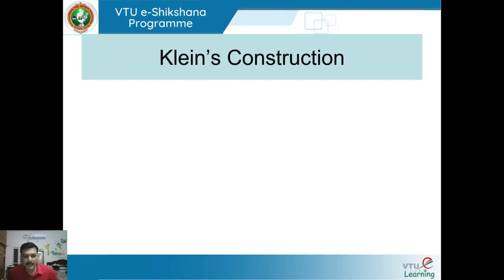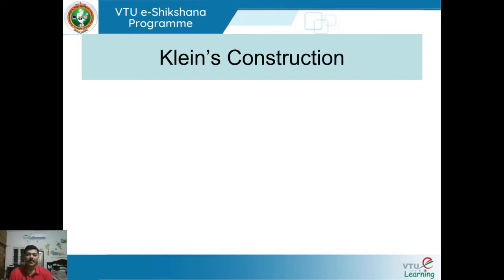Hello students, welcome back to the final session of module 2 on velocity and acceleration analysis of mechanisms using graphical methods. This is the last topic of this module wherein we will learn a very simple construction method used to find the velocity and acceleration of a given mechanism. This method can be applied only to the slider crank mechanism, not to a 4-bar chain.